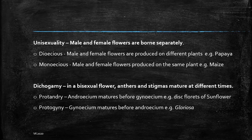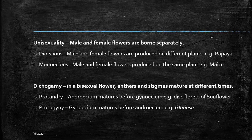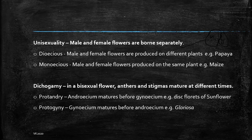One of the ways they do it is unisexuality — male and female flowers are borne separately. The plant itself is bisexual, but the individual flowers are unisexual. So on one branch there can be a male flower and on another a female flower, which reduces the chances of a male flower pollinating a female flower of the same plant. Two conditions arise from this: if male and female flowers are on the same plant, it is called the monoecious condition — seen in maize. And if male and female flowers are on different plants, it is the dioecious condition — seen in papaya.